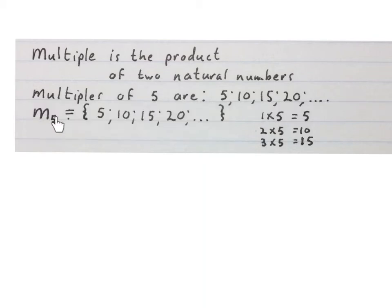Here is a shorter way of writing it. Capital letter M small 5 on its foot equals curly brackets 5, 10, 15, 20, 3 dots and close the curly brackets. Shortest way of writing the multiples of 5.